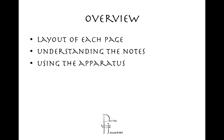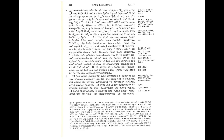Just as yesterday, we're going to look at the layout of each page, try to understand the basics of the notes, and then how to use the apparatus. So this is a page from the Greek New Testament, Nestle-Aland 27. Nestle-Aland 28 is out, but Nestle-Aland 27 is the text edition that I cut my teeth on, so that's the one I'm going to be using.